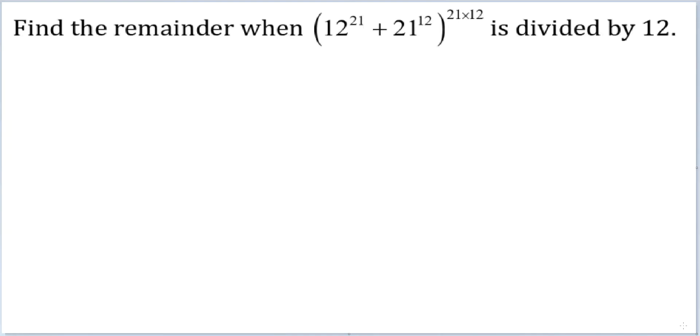Let's look at this question. Find the remainder when 12 raised to the power 21 plus 21 raised to the power 12, whole thing raised to the power 21 times 12, is divided by 12.